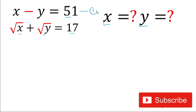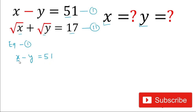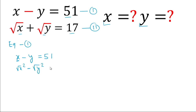We'll take the first expression as equation 1 and the second one as equation 2. Writing equation 1: x minus y equals 51. We can write x as under root x squared, and likewise write y as under root y squared, so that equals 51.